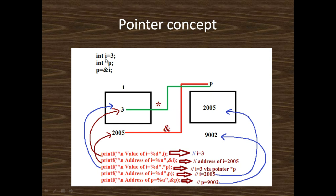Suppose here i is an integer variable whose value is 3, and *p is a pointer where p = &i, meaning the address of variable i is stored in integer pointer p. In this block diagram I describe how the address is assigned to an integer pointer. The variable name is i, whose value is 3. We consider that the address of variable i is 2005.